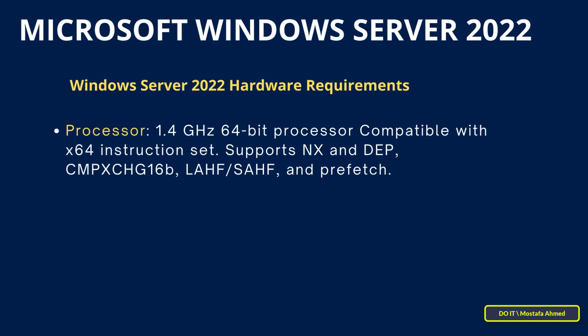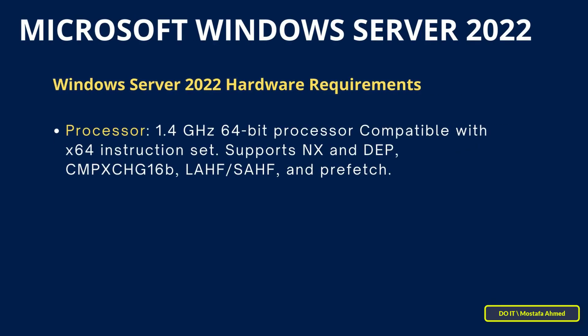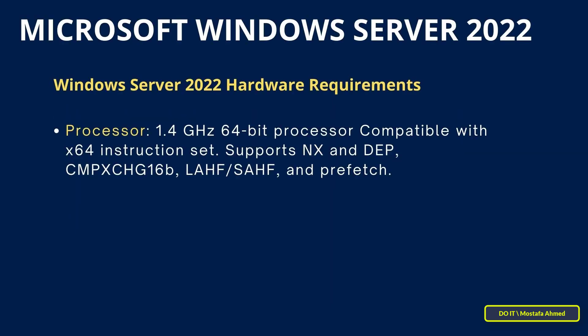Before we dive into the installation, let's take a look at the minimum hardware and system requirements to install Windows Server 2022. First, regarding the processor, it requires at least a 1.4 GHz 64-bit processor, compatible with the X64 instruction set.